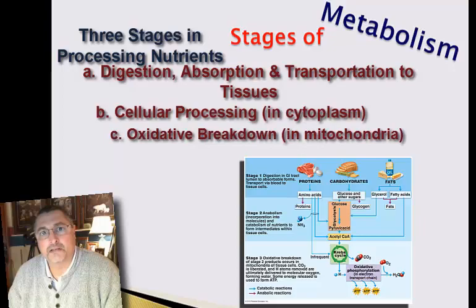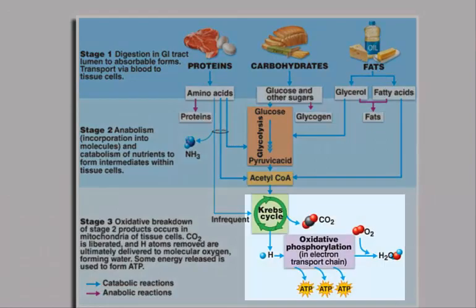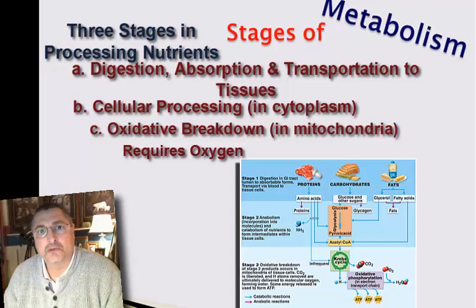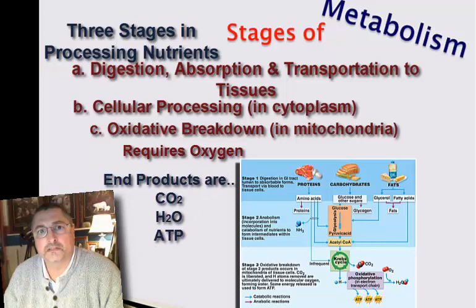The mitochondria is where we see the Krebs cycle and oxidative phosphorylation occurring. A key point here is that the only way we can physically carry those foodstuffs into the Krebs cycle and finish the breakdown process is in the presence of oxygen. So the third phase of metabolism is oxidative breakdown — in the presence of oxygen, we carry the processed foodstuffs from the cytoplasm into the mitochondria, where they are further broken down. The end products of oxidative breakdown are carbon dioxide and the maximum amount of ATP we can generate.